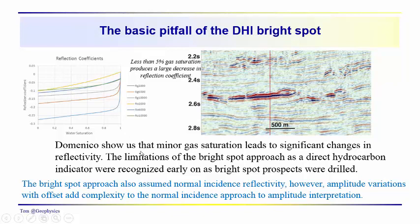So another thing to point out is that the bright spot approach assumed normal incidence reflectivity. And in the beginning in the early 80s, we see increased focus of attention on amplitude variations with offset. And the amplitude variations with offset can add significant complexity to the interpretation and even tying your normal incidence seismic-synthetic to the seismic section, the normal incidence approach to amplitude interpretation. So next time we'll continue on, we'll talk a little bit about amplitude variations with offset. So thanks for joining me and see you next time.